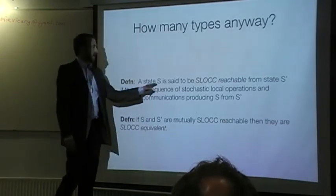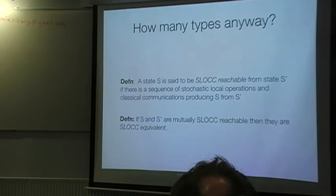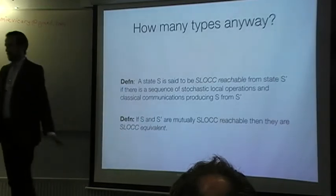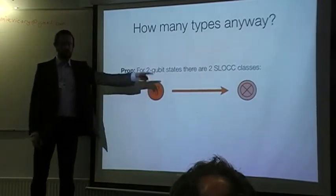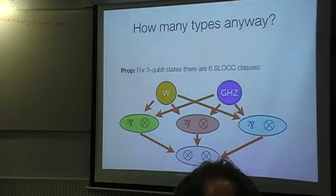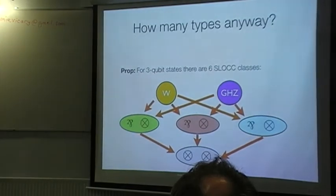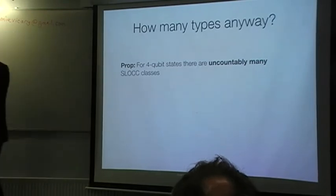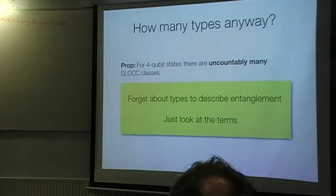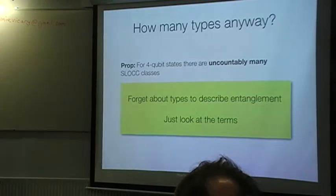So, let's say a state S is called SLOCC reachable if there's some sequence of stochastic local operations which translates one state to the other. So, these things, in particular, can never create entanglement. And so, if two things are mutually reachable, then they're SLOCC equivalent. So, for two qubits, there are only two SLOCC classes. Entangled, not entangled. For three qubits, there are six. In particular, these guys are inequivalent despite being maximally entangled. And then we get to four, we're screwed. So, now there is no... At this point, I would say, let's just give up. We're not going to have a type theory to describe entanglement in a meaningful way. So, let's just look at the terms themselves. Give up on the types.